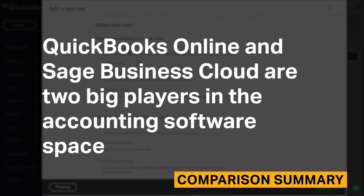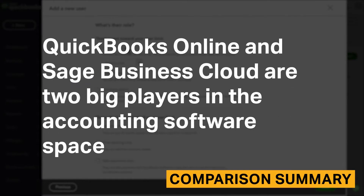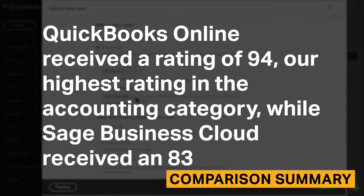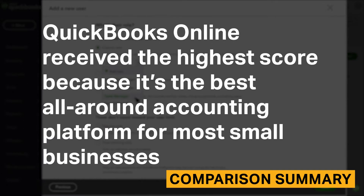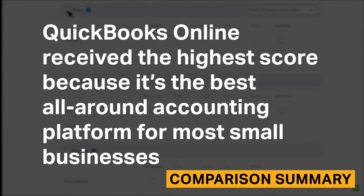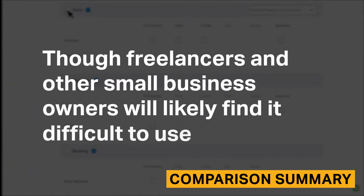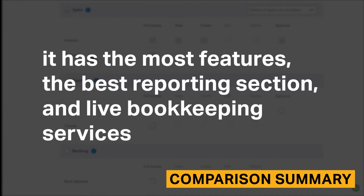QuickBooks Online and Sage Business Cloud are two big players in the accounting software space. QuickBooks Online received a rating of 94, our highest rating in the accounting category, while Sage Business received an 83. QuickBooks Online received the highest score because it's the best all-around accounting platform for most small businesses. Though freelancers and other small business owners will likely find it difficult to use, it has the most features, the best reporting section, and live bookkeeping services.